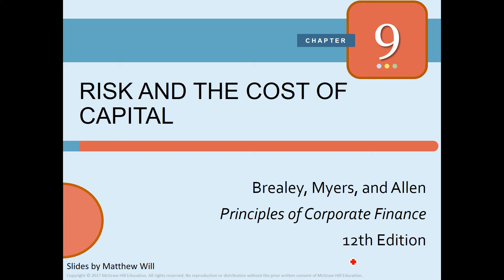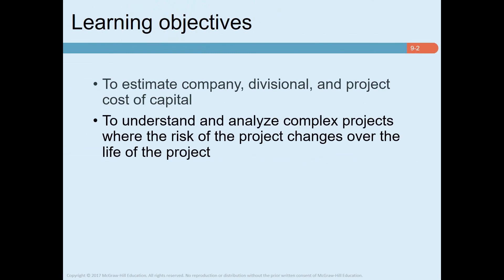The project's cost of capital depends only on market risk. Diversifiable risk can affect project cash flows but does not increase the cost of capital, since it can be diversified away. Also, don't be tempted to add arbitrary fudge factors to discount rates — these are too often added for projects in unstable parts of the world. Our two learning objectives today are: estimating the cost of capital for a company, individual division, and project; and understanding how to analyze complex projects when the risk of the project changes over time.